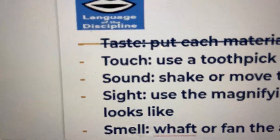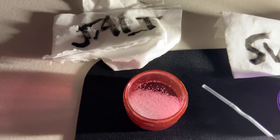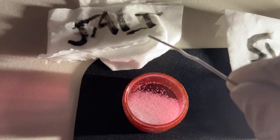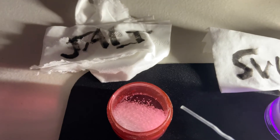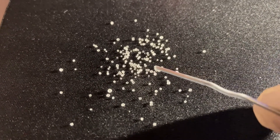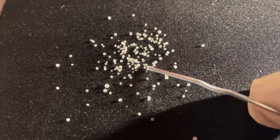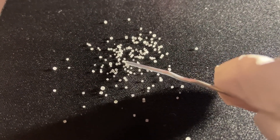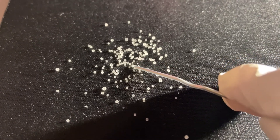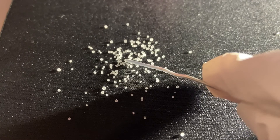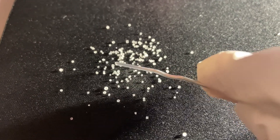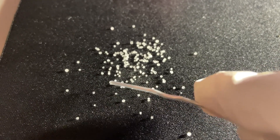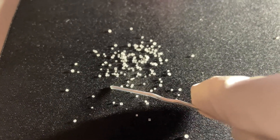Let's focus on touch first. Let's use our sanitary toothpick or in this case paper clip to see how salt and sugar feel. This is salt. I'm going to press down on it and we can see that the salt particles move away when I press on it. So they are not squishing — they are actually just bouncing off, meaning that salt is rather hard.